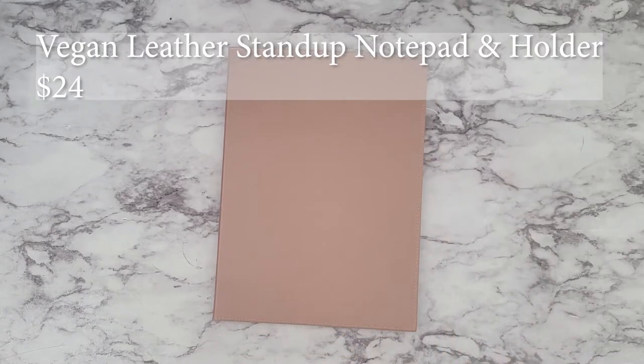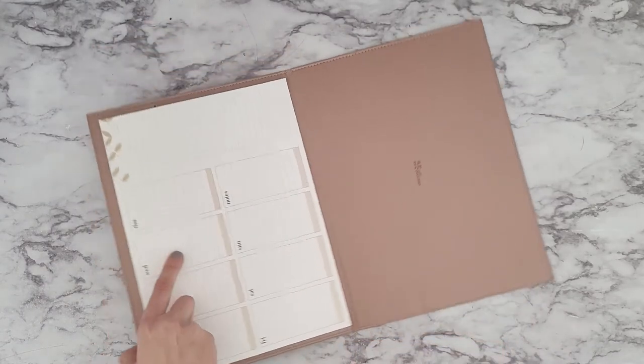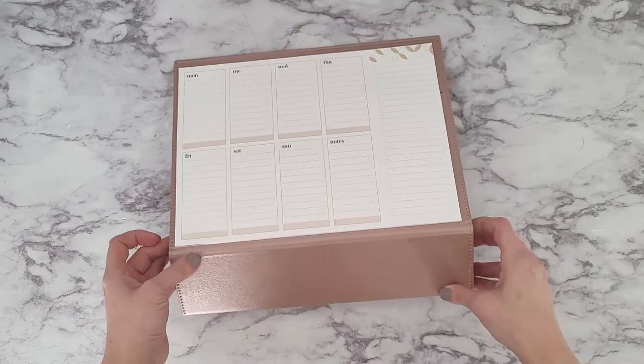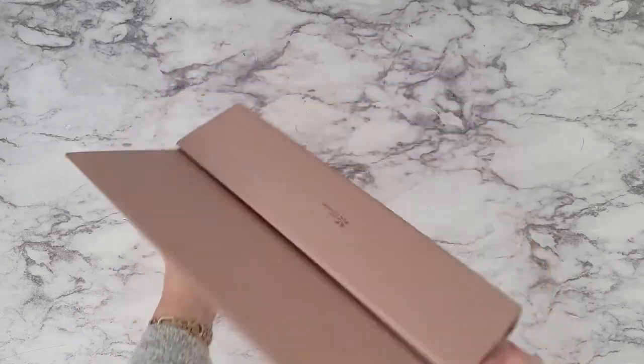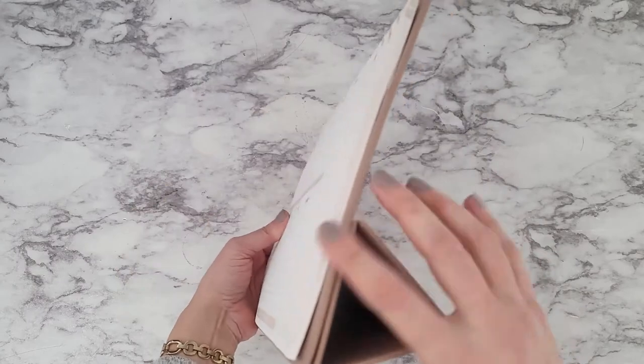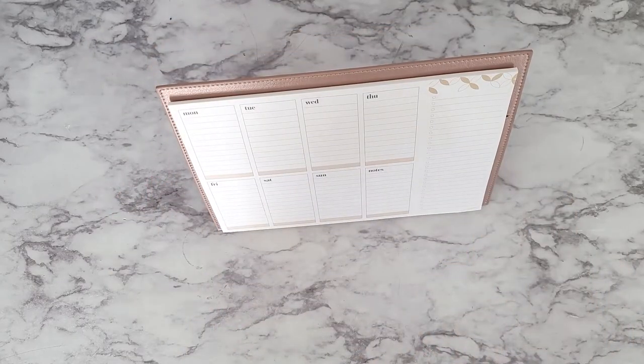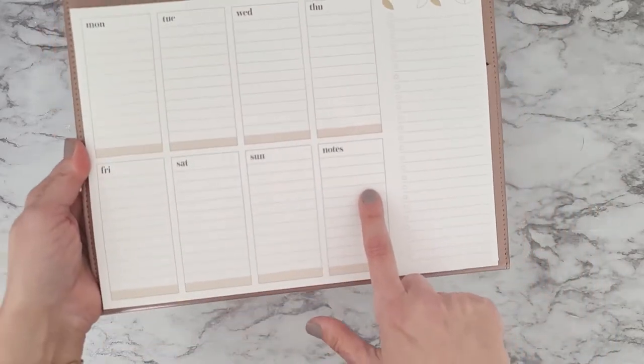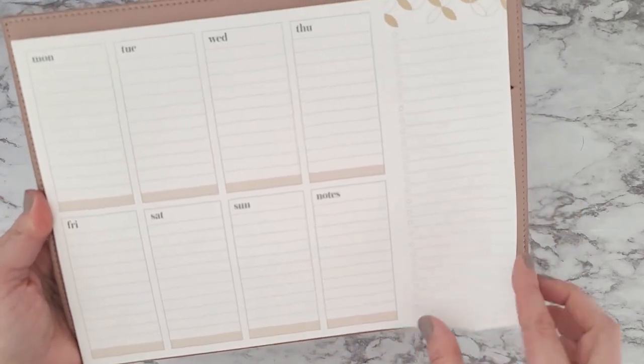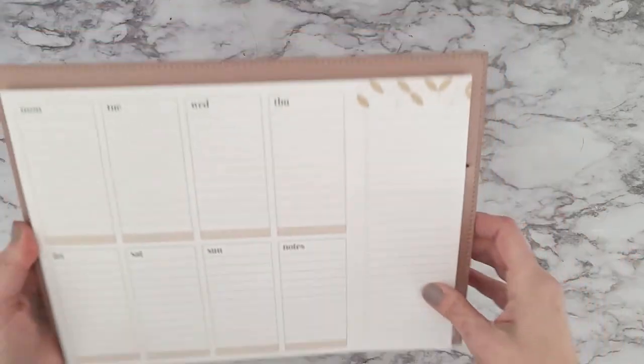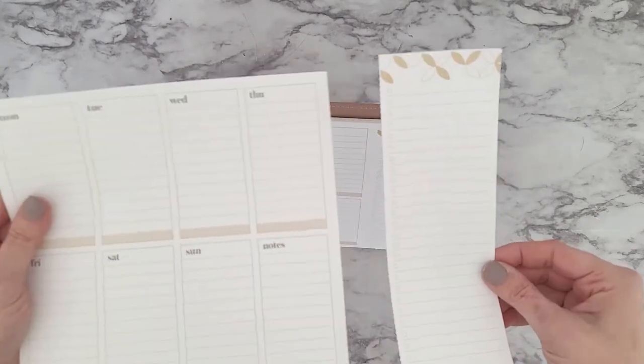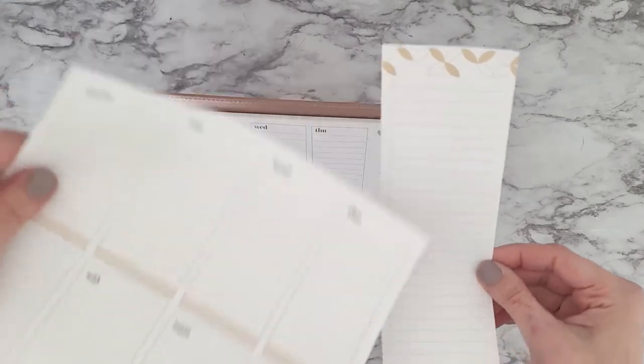Let's start with the Vegan Leather Stand-Up Notepad and Holder. This retails for $24. I've shown you in a past video, the Focus Collection one, where there's a similar one to this. This one's kind of a shimmery rose gold, kind of a blush color, and it folds, looks like a triangle, sits really great on your desk. The notepad that comes in it is Monday through Sunday, and then it has a box for notes, as well as some to-do boxes on the side. It's perforated here, so you can tear it.